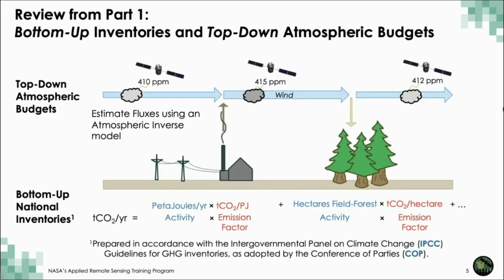First, I want to review some concepts from part one. In this section we are looking primarily from top-down approaches, where you have a satellite or surface site measuring the concentration of carbon dioxide or methane in the atmosphere, and from that you're inferring fluxes at the surface. This is in contrast to the bottom-up inventories, which use process estimates to scale up estimates of fluxes.